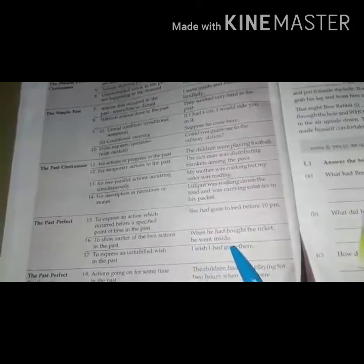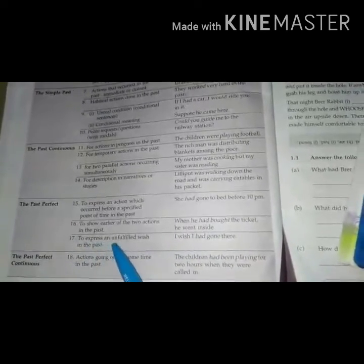The past perfect: To express an action which occurred before a specified point of time in the past. Example: She had gone to bed before 10 p.m. To show earlier of the two actions in the past, when he had bought the ticket, he went inside. To express an unfulfilled wish in the past: I wish I had gone there.